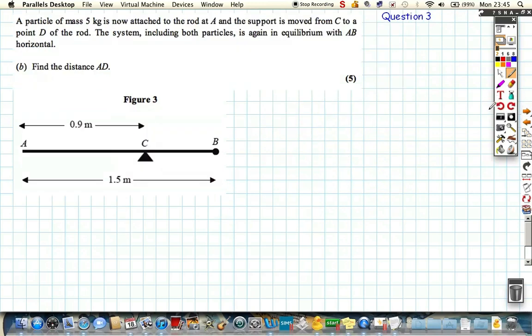Part b, it says particle of mass 5g is now, okay, so we have, let's put our forces on again. We've got 2g acting vertically down here, we have a reaction force acting up here, and we now have a mass of, or a weight of 5g acting over here.